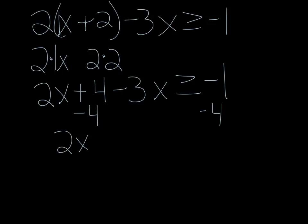So now I have 2x minus 3x is greater than or equal to negative 5. 2 minus 3 is negative 1x is greater than or equal to negative 5.